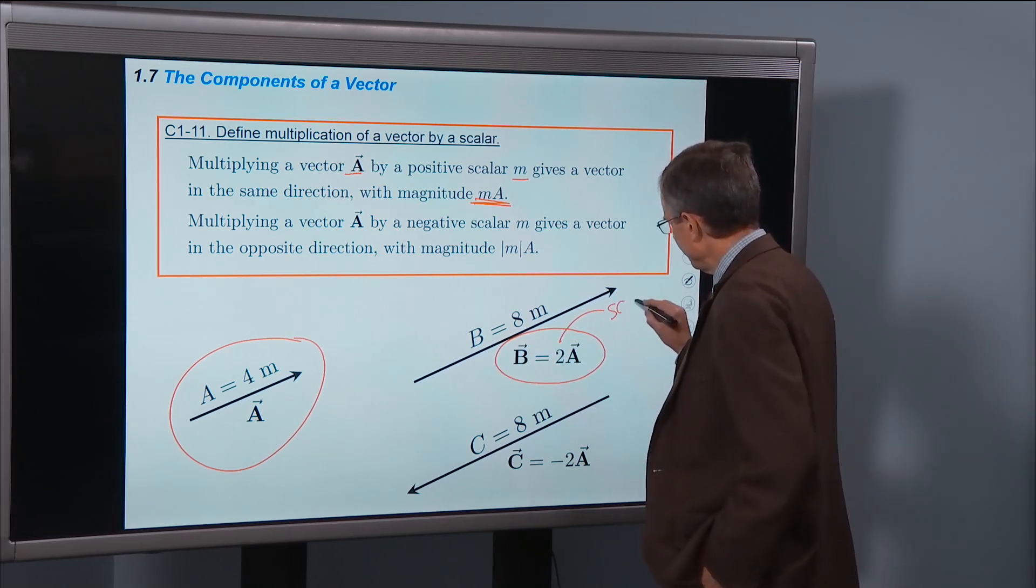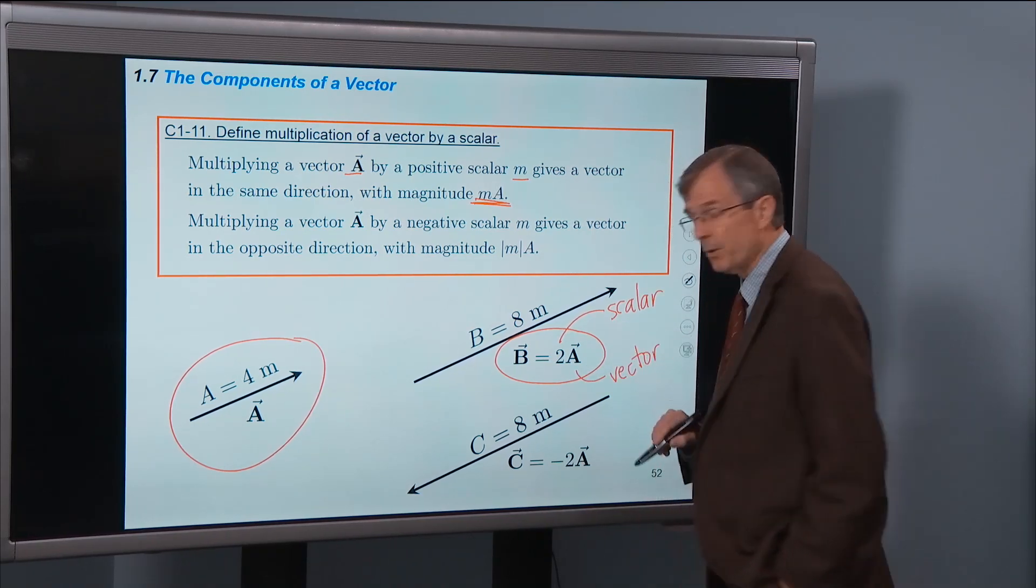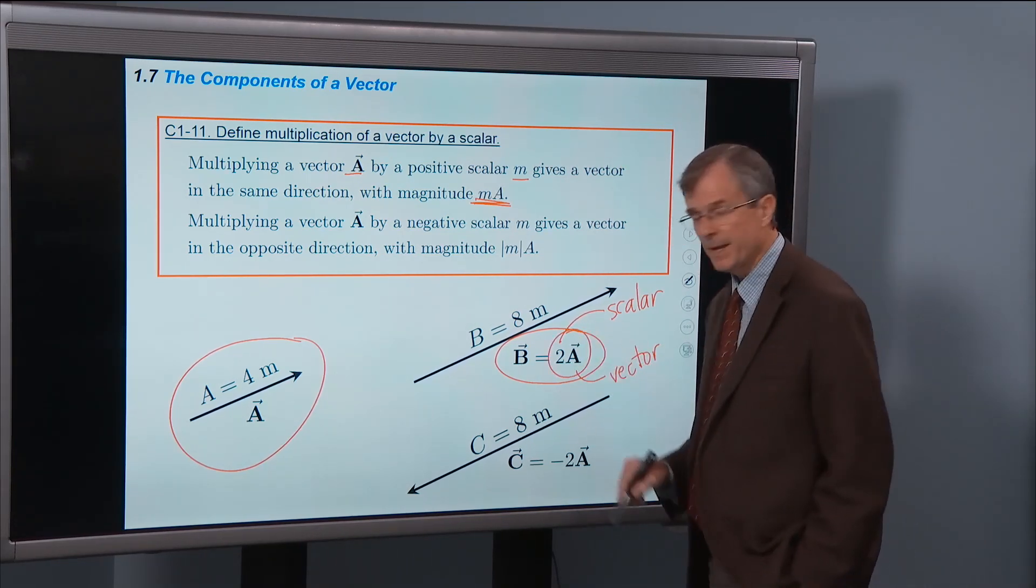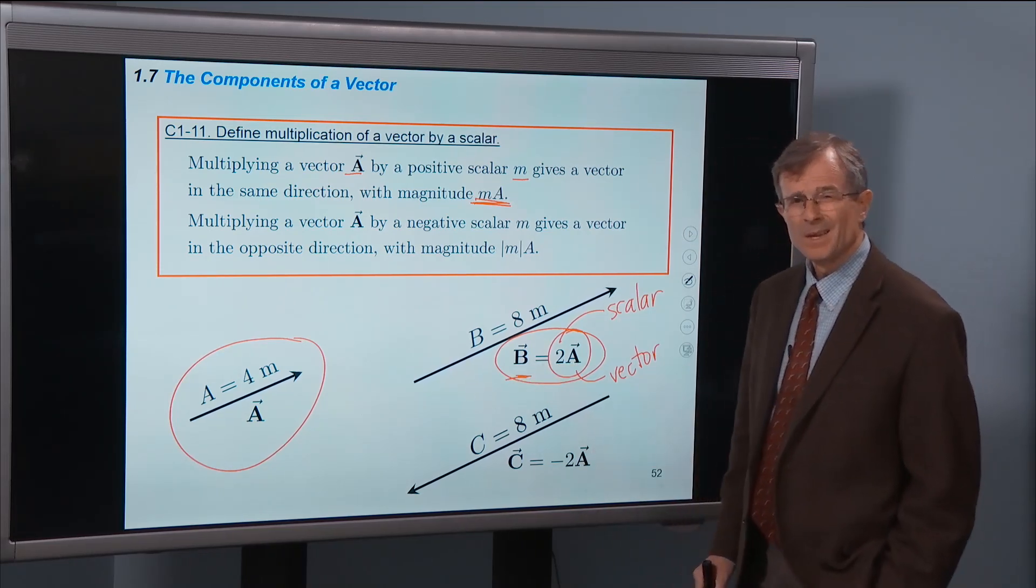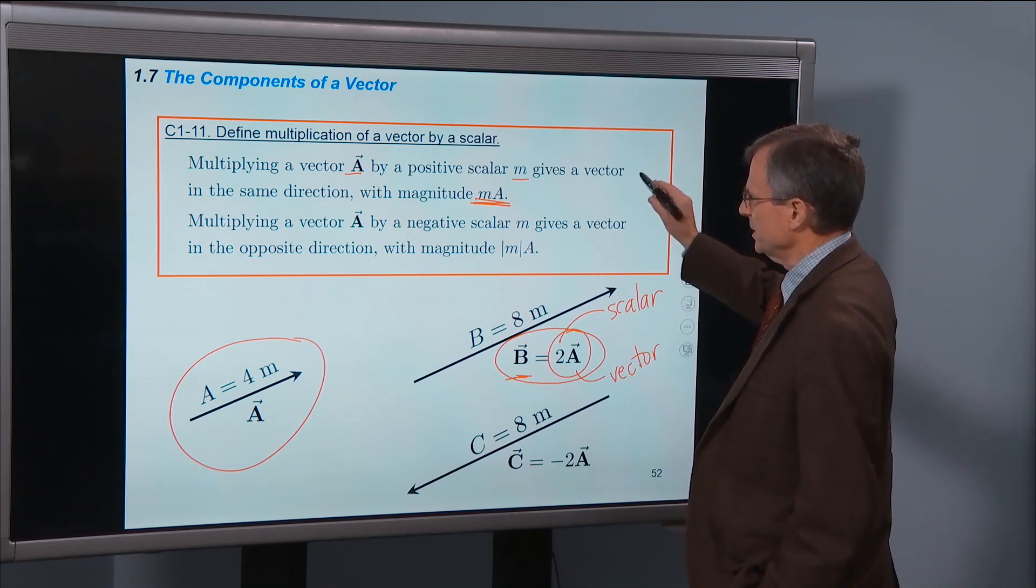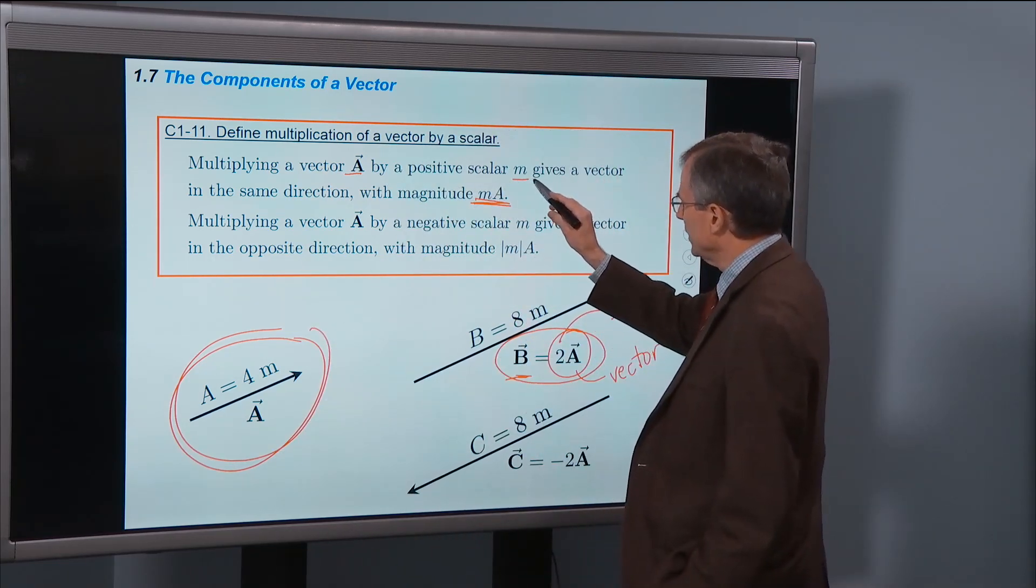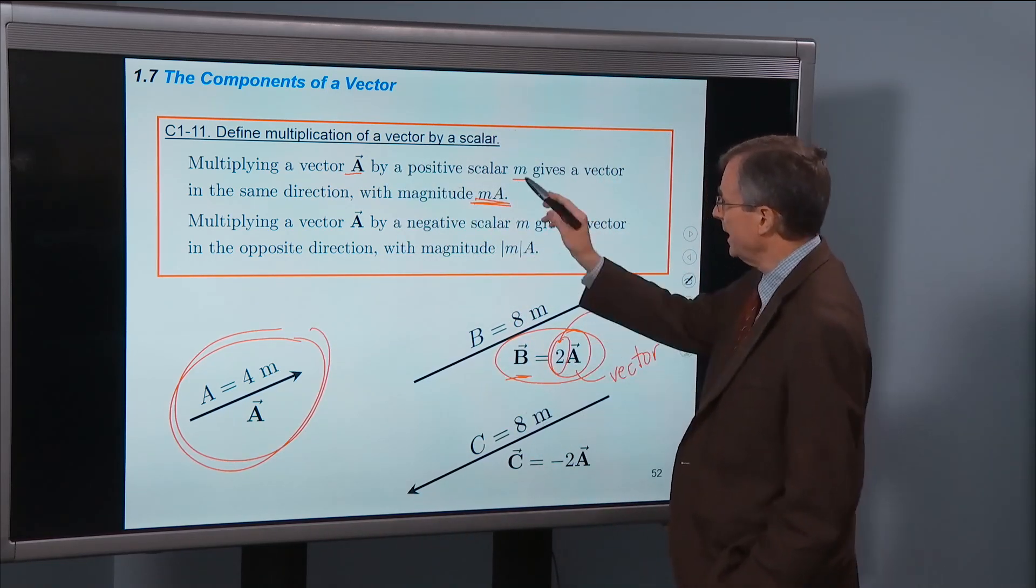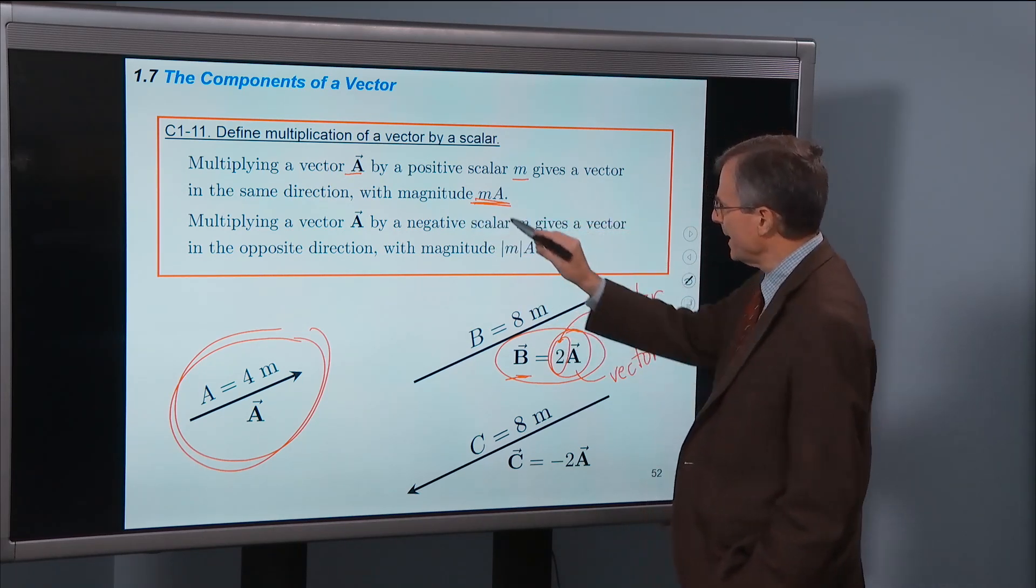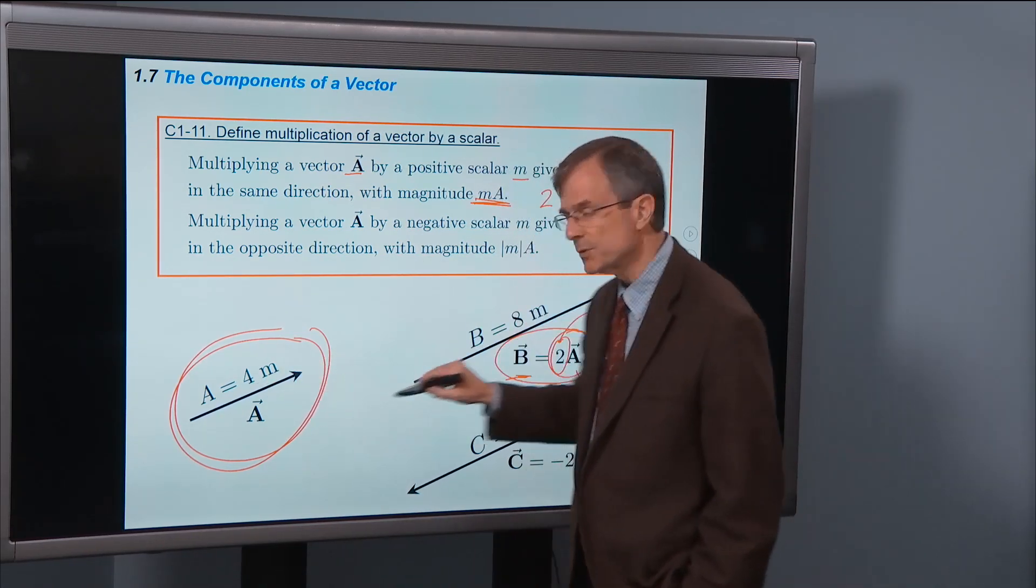What is 2A? Well 2 is a scalar, just a number, and A is a vector. And I want to know the direction and the magnitude of this vector 2A, which we call B. How do we find it? Well according to this prescription, we multiply the vector A by a positive scalar, in this case that's 2, and that gives a vector in the same direction but with a magnitude, in this case 2 times the magnitude of A, which is 4 meters.